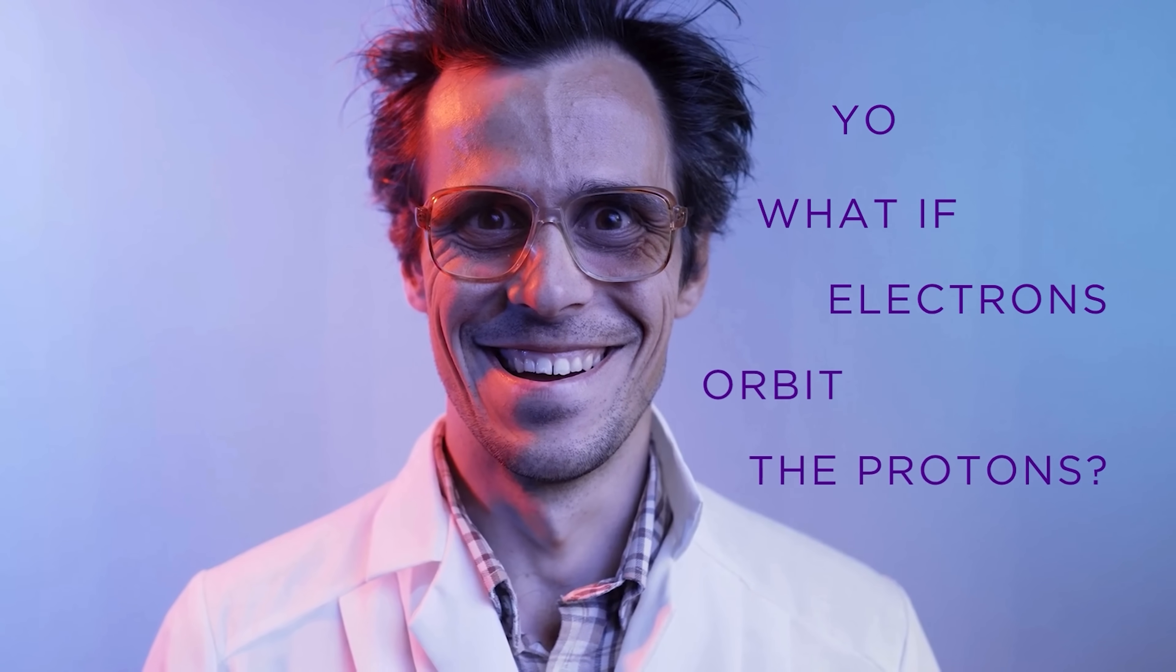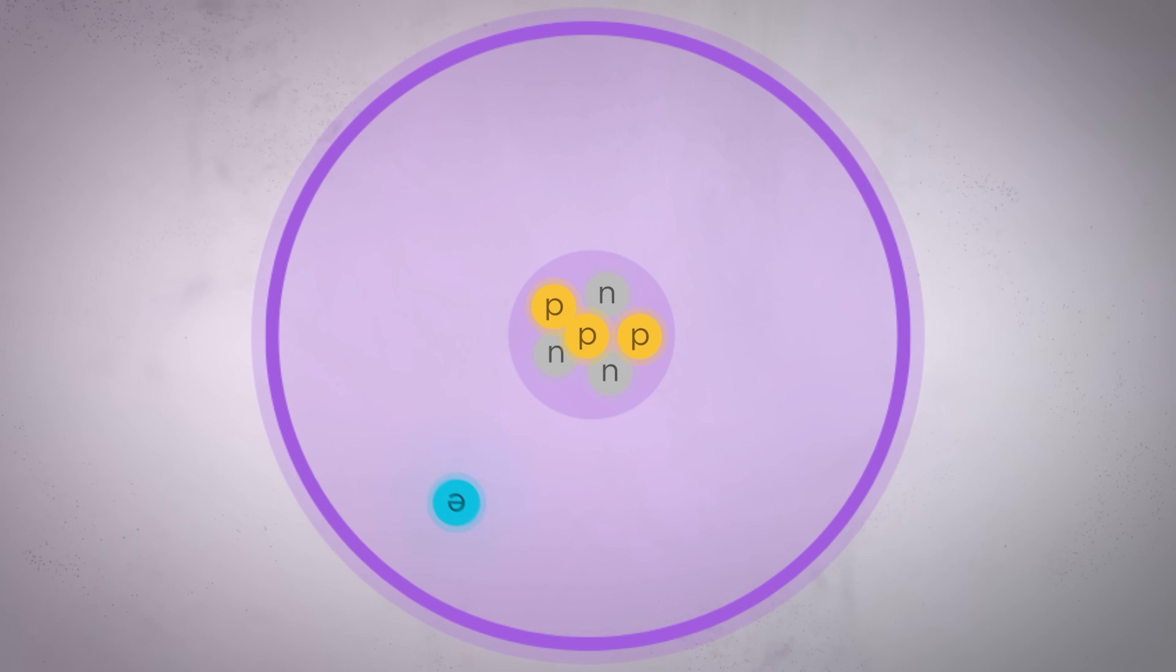Some random genius was like, what if electrons orbit the protons, just like Earth orbits the sun? Brilliant idea. Except it's actually a terrible idea. Because when an electron moves in circles, it emits light, and that uses up some of its energy. So an orbiting electron would lose speed and then fall into the proton anyway. Congratulations, we have just solved, well, nothing at all.